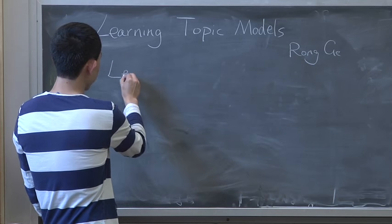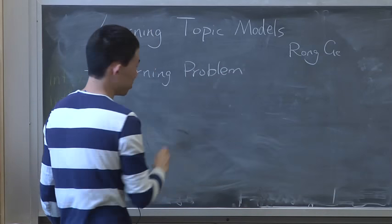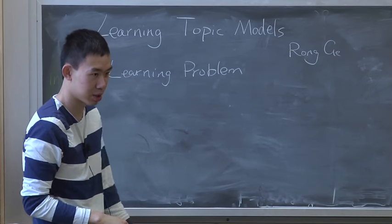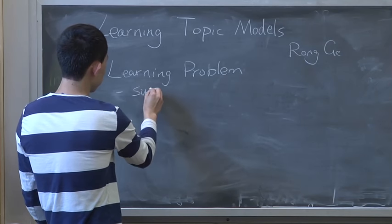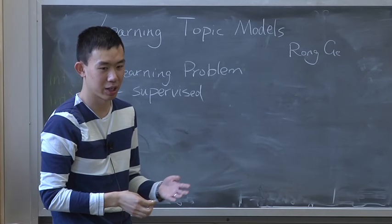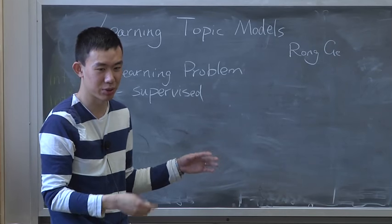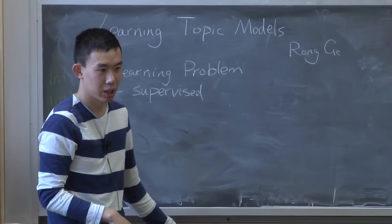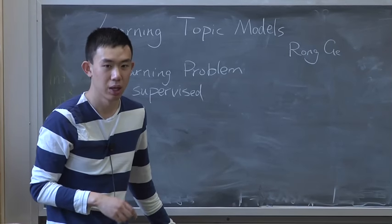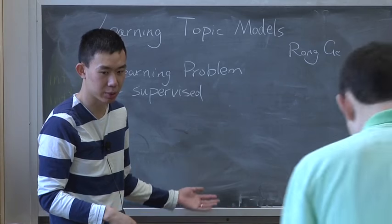In general there are many kinds of learning problems. The most popular machine learning problem is called the supervised learning problem. In supervised learning, it's like you want to learn a spam filter. You are given a lot of emails and you have labels whether these emails are spam or not. The goal is to learn a function so that given a new email, you can determine whether it's spam or not.